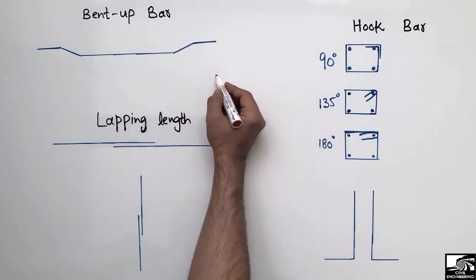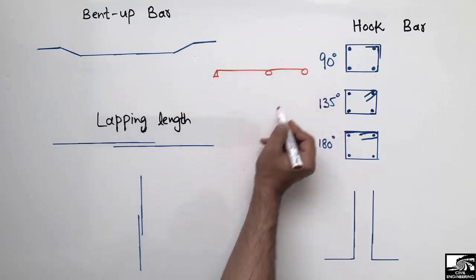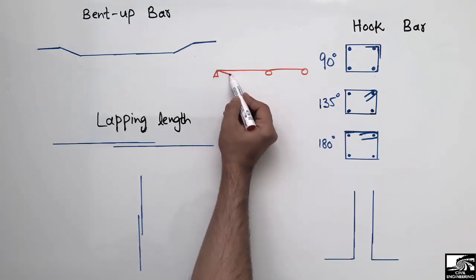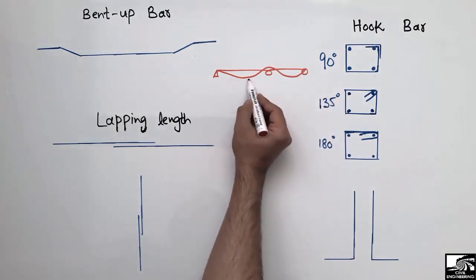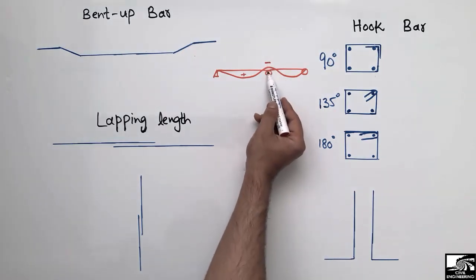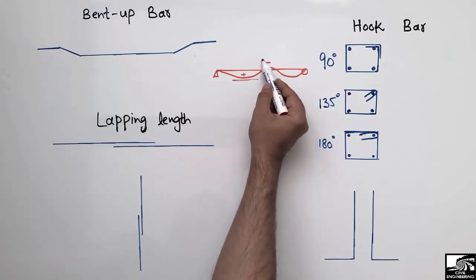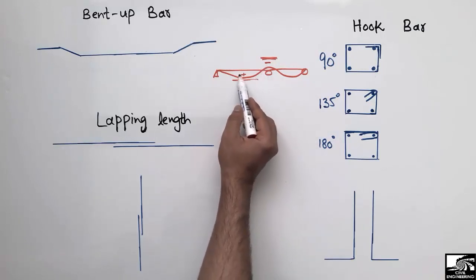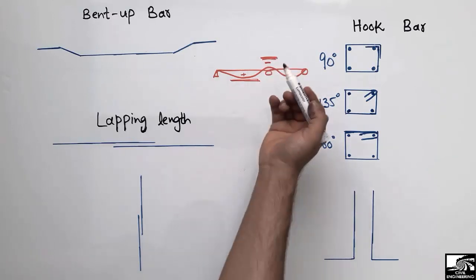Let's consider a beam supported at various points. When the load acts on this beam, it produces a positive bending moment at mid-span and a negative bending moment at the supports. So we need to provide reinforcement at the bottom for positive bending moment and at the top for negative bending moment. Rather than cutting the reinforcement separately, we use bent-up bars.